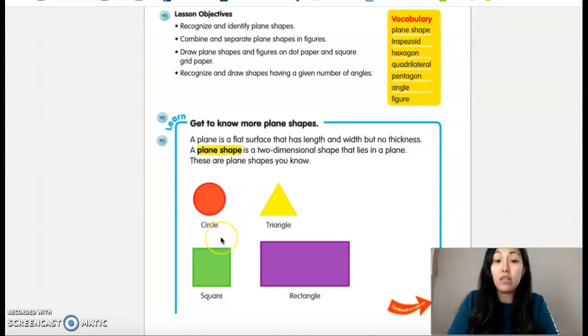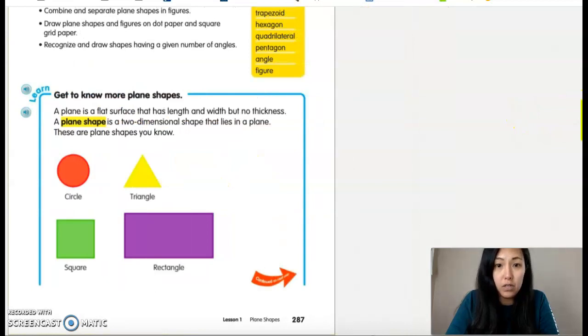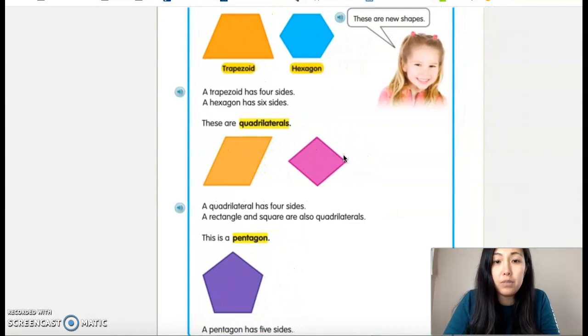So we all have a circle, triangle, square, and rectangle. You already know this from previous grades too, but we're going to be introducing a couple of new shapes here.